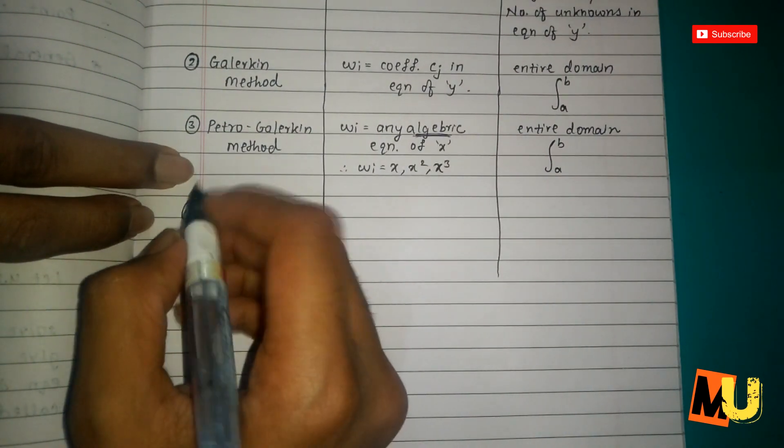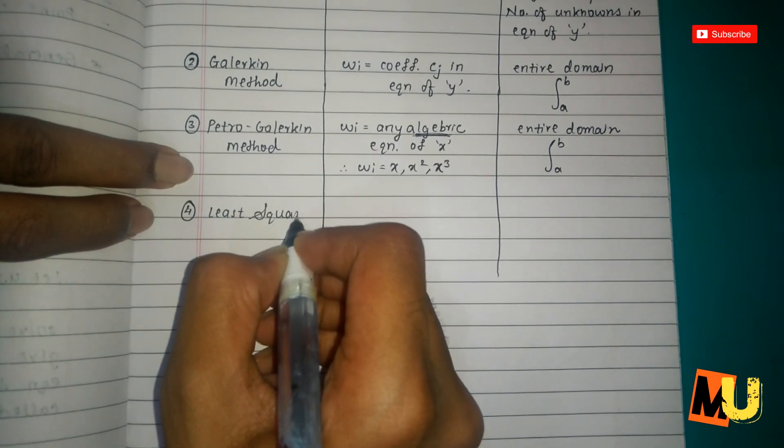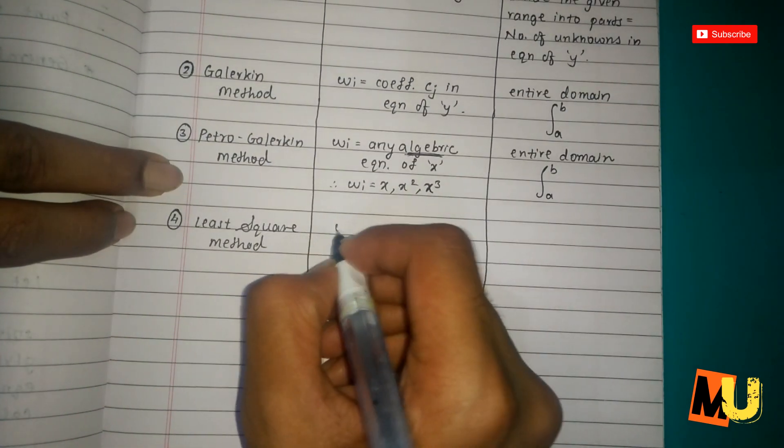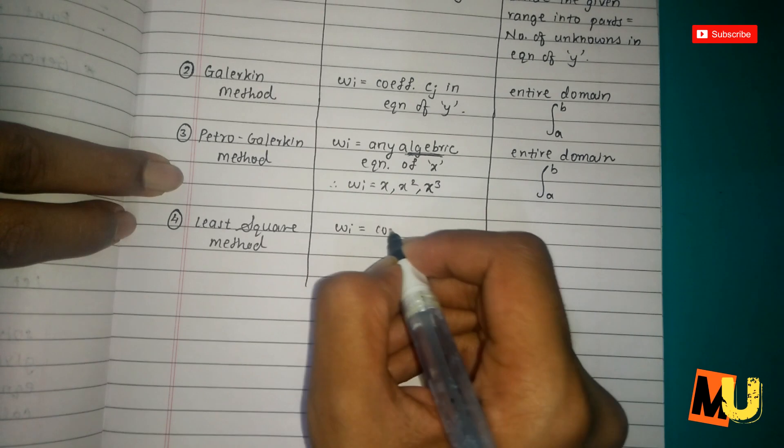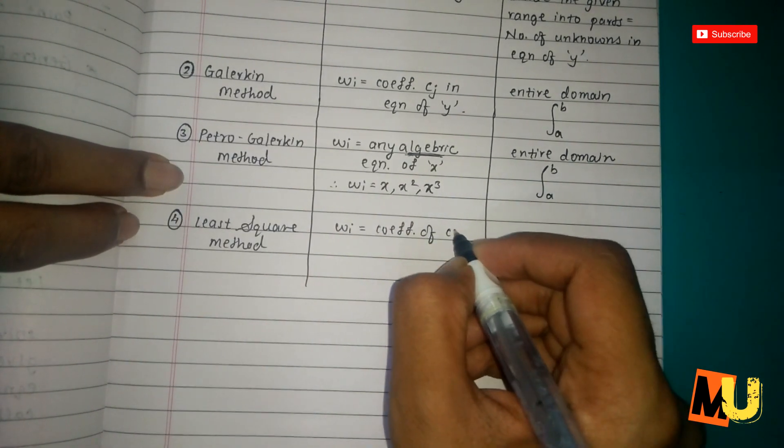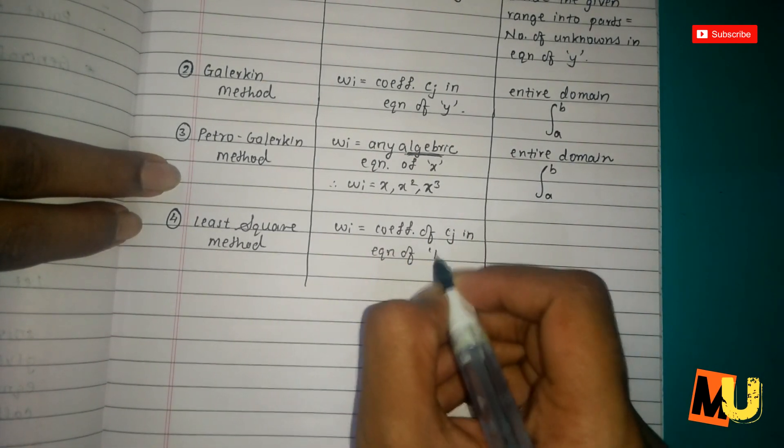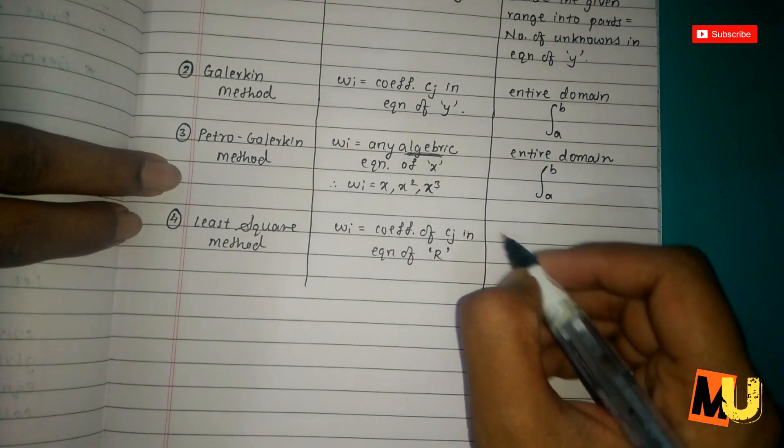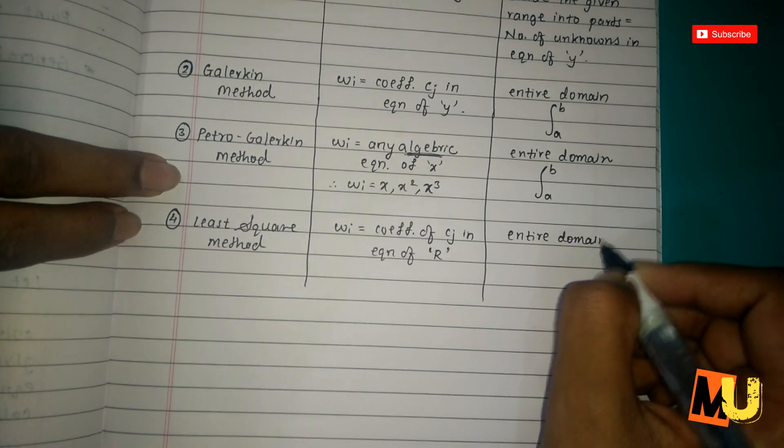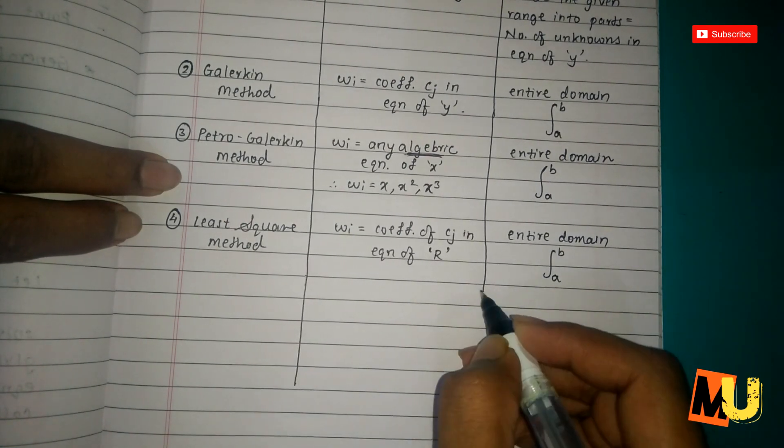For the fourth method, that is least square method, w_i equals coefficient of c_j in equation of r, and entire domain, that is a to b.